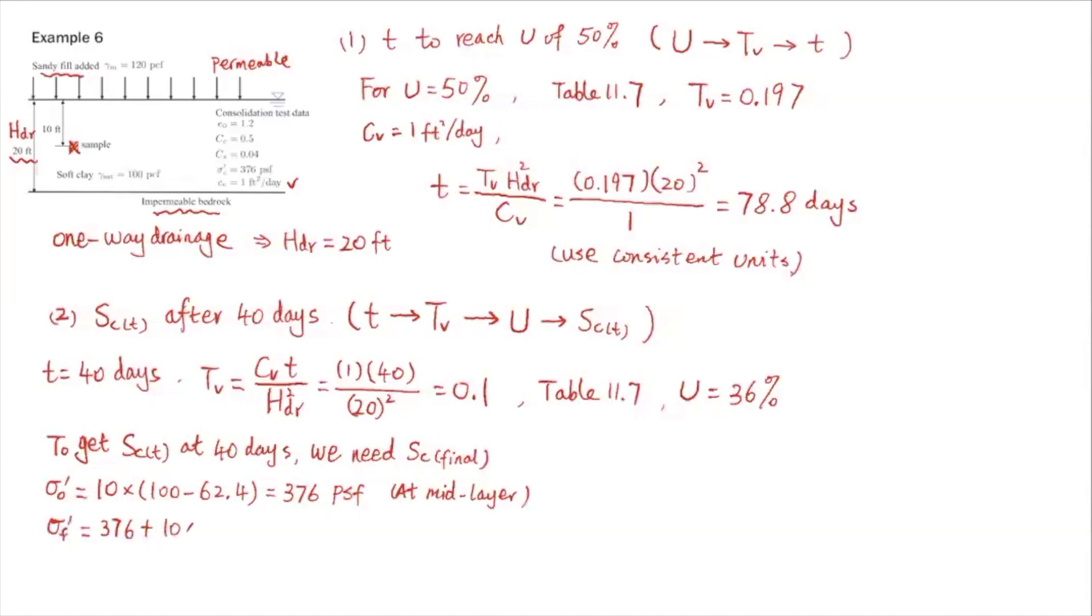I'm going over this relatively fast because we have been covering this in part one for quite a while. Hopefully you're comfortable with this calculation. Final effective stress is initial plus the change due to added sandy fill on top. So it's 376 plus 10 feet of sandy fill, and that's 1576 PSF. Preconsolidation pressure, sigma C prime, is 376, that's given. So sigma naught prime equals sigma C prime. It's NC clay.